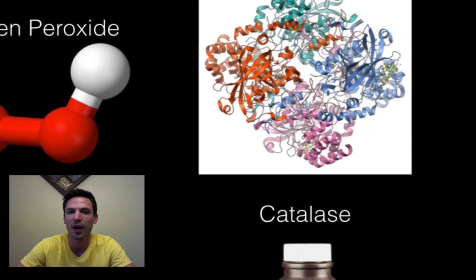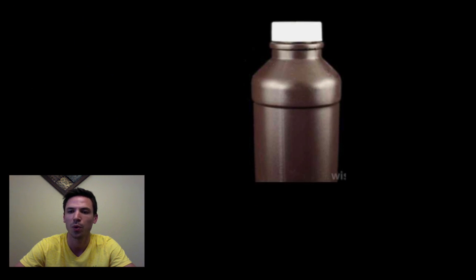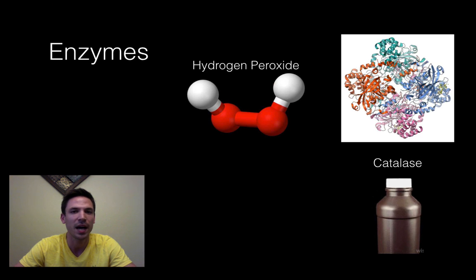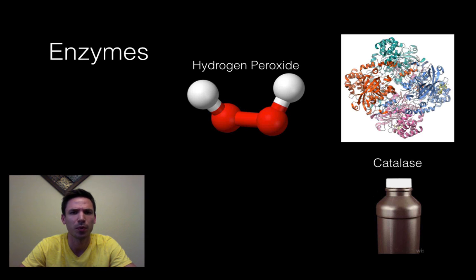Now you might have heard of hydrogen peroxide before — it's sold in stores in these brown bottles. You might have used it to put on wounds and cuts. But hydrogen peroxide, believe it or not, is actually produced by your cells as a byproduct, and it is toxic. Too much of it will end up killing your cells and killing you. So you're kind of left with this question: what do I do with all this hydrogen peroxide if it's going to eventually kill me?